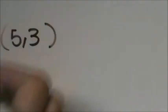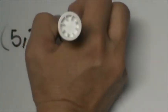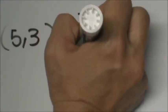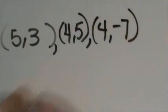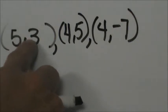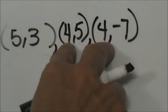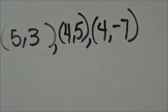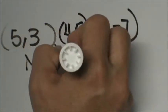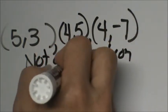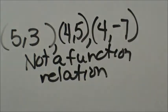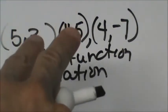Now let's write the inverse by reversing the order: (3, 5) becomes (5, 3), (5, 4) becomes (4, 5), and (negative 7, 4) becomes (4, negative 7). Let's check if this inverse is a function: push button 5, get out 3. Push button 4, get out 5. Push button 4 again, get out negative 7. You can't push the same button and get two different drinks — the machine doesn't function correctly. So this inverse is not a function; it is a relation.